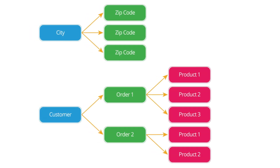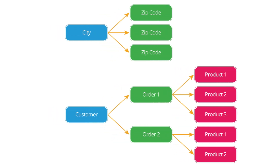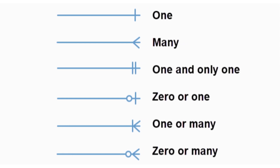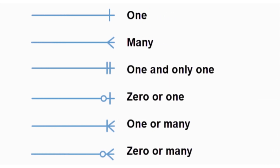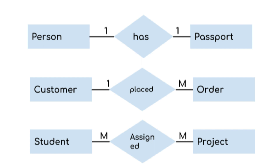Database relationships are the connections between tables that allow us to link related data. They're essential for maintaining data consistency and integrity. Primary keys and foreign keys are used to create relationships in MySQL. There are three main types of relationships: one-to-one, one-to-many, and many-to-many. Let's explore each of them in detail.